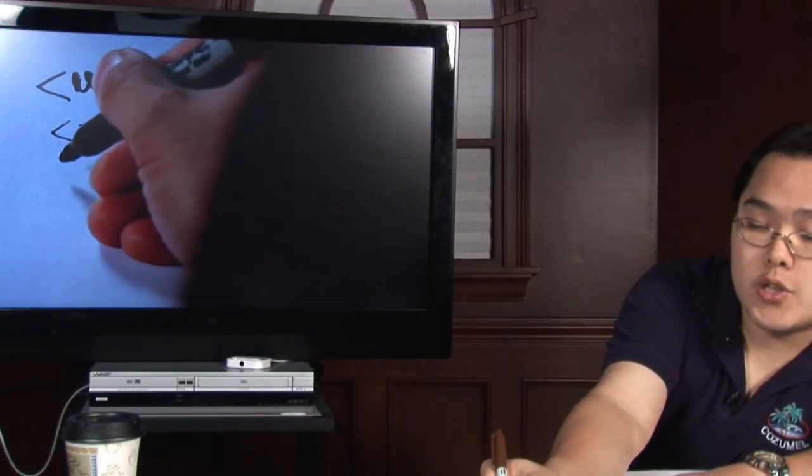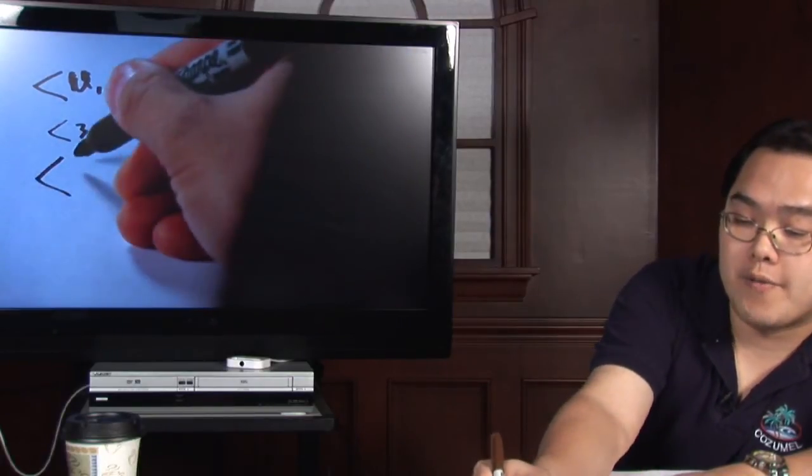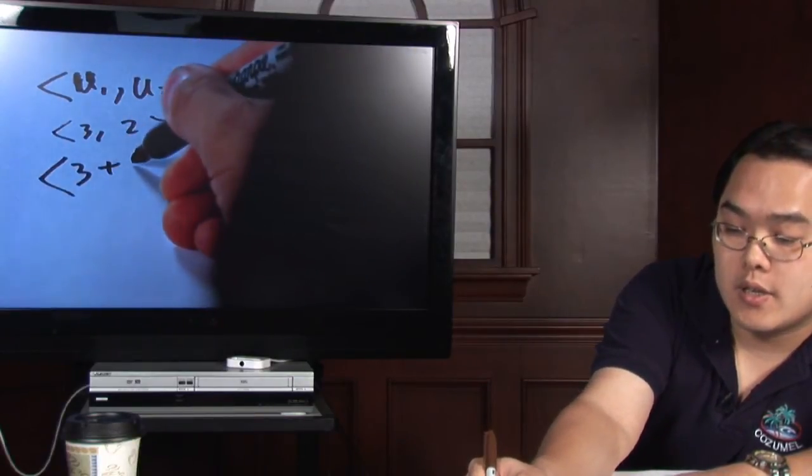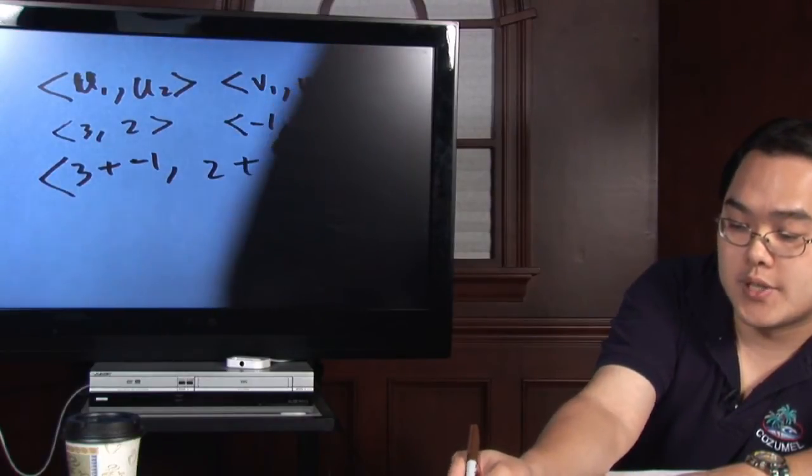So basically what you would do is make some room here. You have 3 plus -1 and then 2 plus 5.